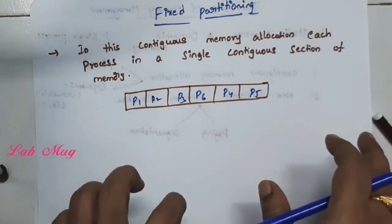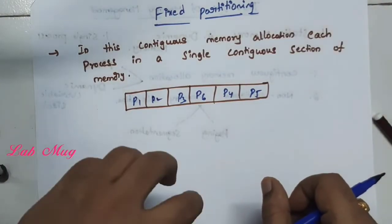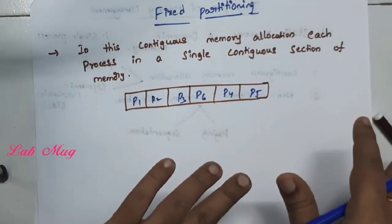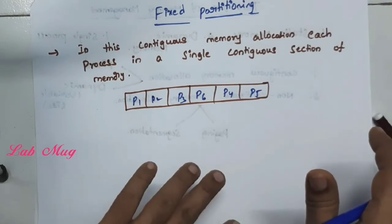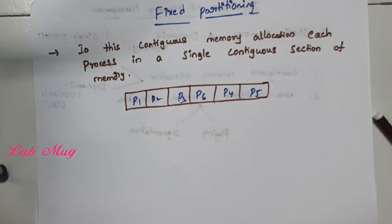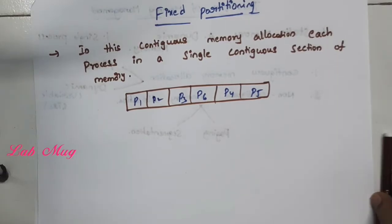In this continuous memory allocation with fixed partition, if we allocate a certain MB — for example, within 4MB if we use only 3MB — the remaining 1MB cannot be used by us. That is the main drawback in fixed partition allocation. When total MB is divided among all processes, whatever a process utilizes is utilized, but the remaining memory is not used. In fixed partition, that is the main concept.